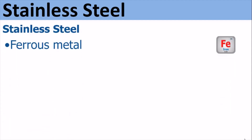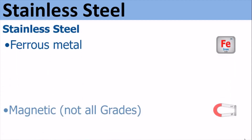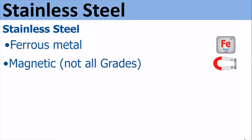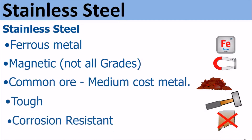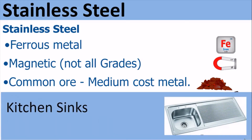Stainless steel. Stainless steel is a ferrous metal — it contains iron. It is magnetic, although there are non-magnetic grades of stainless steel. It is a common ore. It is tough and corrosion resistant, as other metals are added to it which make it corrosion resistant. Because it is corrosion resistant, it's often used for kitchen sinks.